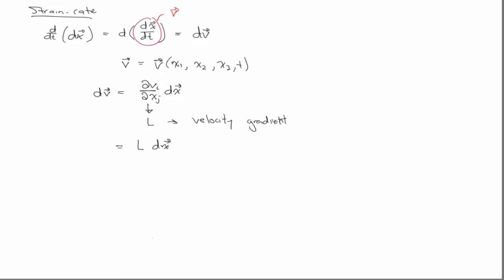But you might have wanted to write this change in the velocity vector in terms of the reference configuration. So from our definition that d little x is F dx, we can just plug that guy right in, and we can write that L F dx.